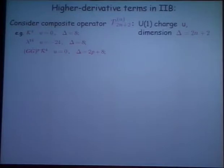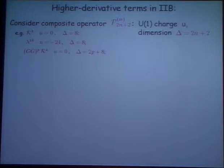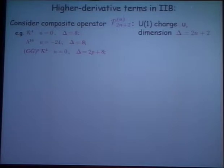So I want to discuss higher derivative terms beyond the classical supergravity terms. In general, there'll be some product like R to the fourth, or some function — lambda is the dilatino — there'll be some power of the various fields in the theory, which I'll call P, and that'll be characterized by having a U(1) charge U and having some dimension delta, which is related to N, where N was the power of alpha prime that we're talking about.